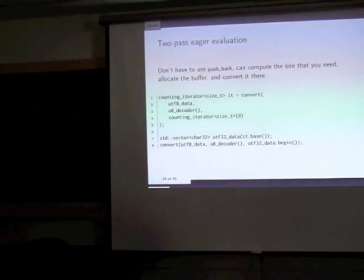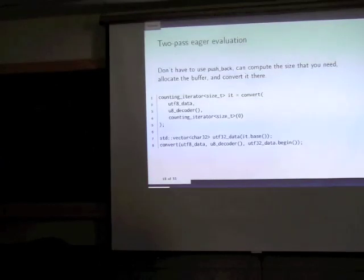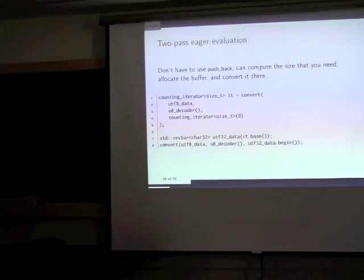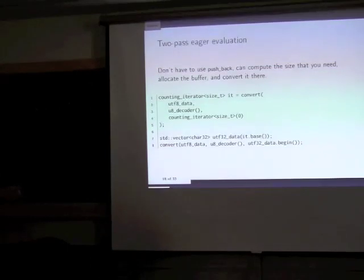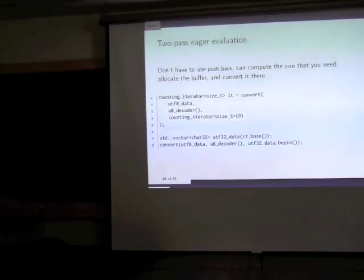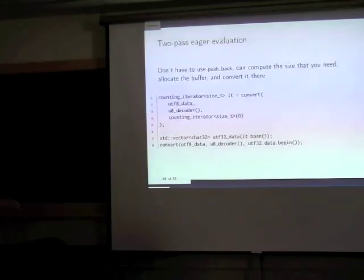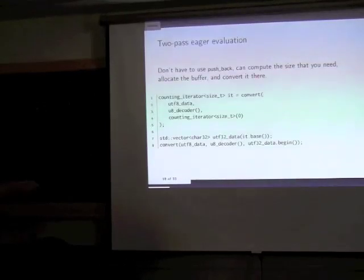If you want eager evaluation without push_back, you can do it in two passes: first count how many characters you need using a counting iterator (from Boost.Iterator), then allocate the data, and directly write into the vector without push_back.